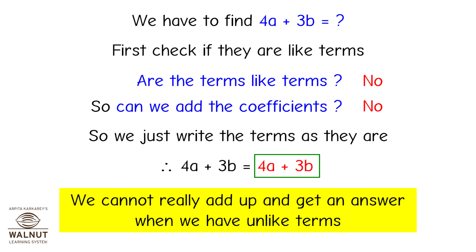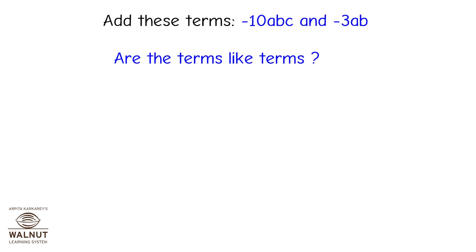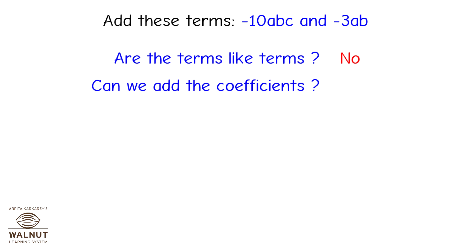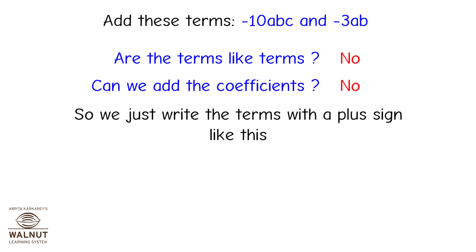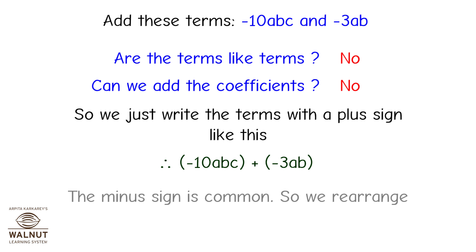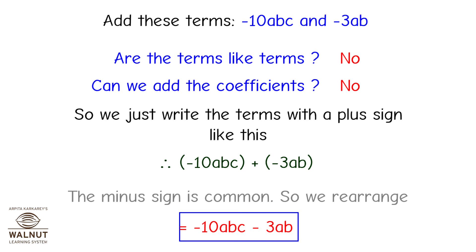Add -10abc and -3ab. Are the terms like terms? No. Can we add the coefficients? No. So we write the terms with a plus sign: -10abc + (-3ab). The minus sign is common, so we rearrange: the answer is -10abc - 3ab.